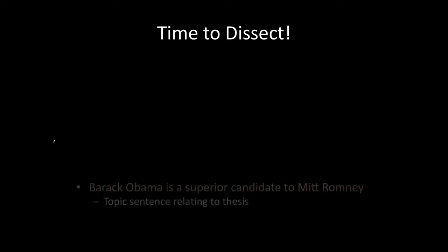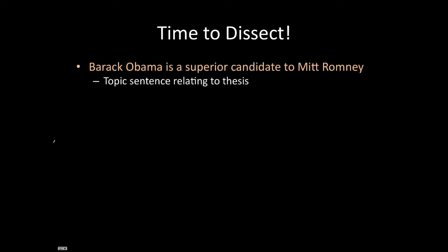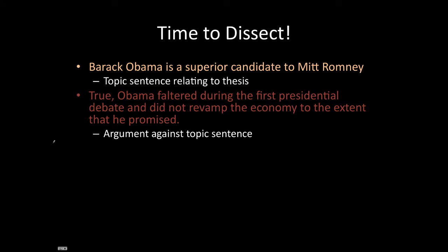So let's dissect how this paragraph follows our first four rules. Our first sentence — Barack Obama is a superior candidate to Mitt Romney — is a strong topic sentence that relates to our thesis. Our next sentence presents the argument against the topic sentence, bringing in the opposing perspective's point of view — somebody who would want Romney to win. Take note that I used the word 'true' here. 'True' is one of those words you use when talking about the opposing argument's view before proving why that view is wrong.